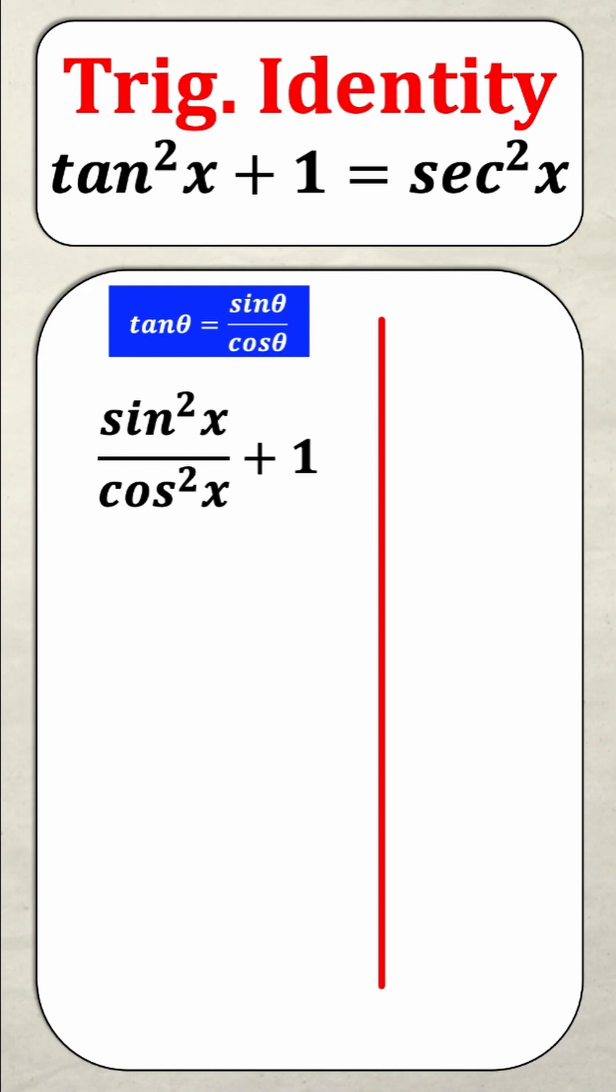Secant is the reciprocal of cos which means it's one over cos. And this means that secant squared x is one over cos squared x. And so now I've finished what I generally consider the first step and that is to turn everything into sine and cos.